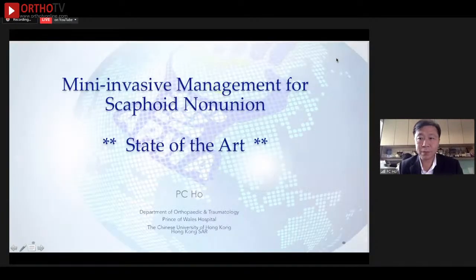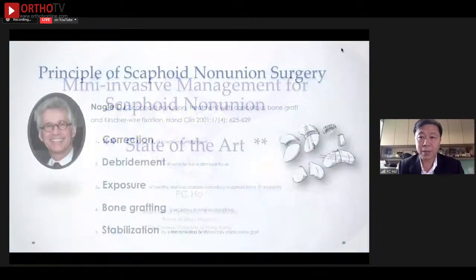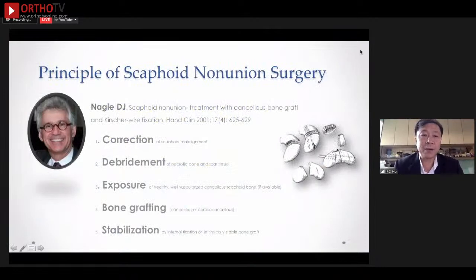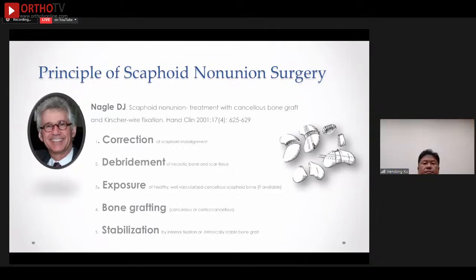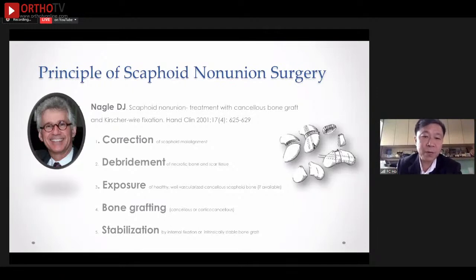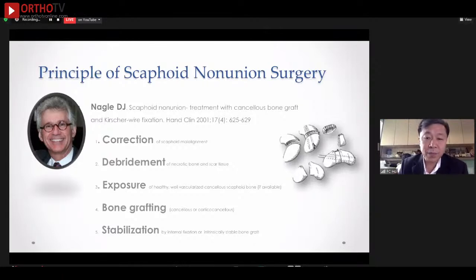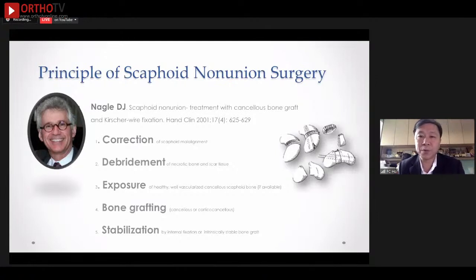I hope this time is all right. I think the principle of scaphoid non-union surgery has been well established and presented by Dr. Nagel. Some principles are: we have to surgically manage the non-union, we need to correct the malalignment, adequate debridement, exposure of the fracture site, and then good bone grafting and stabilization. That's sort of the principle that governs scaphoid non-union surgery. Of course, most of the time in class, we are talking about open surgery.